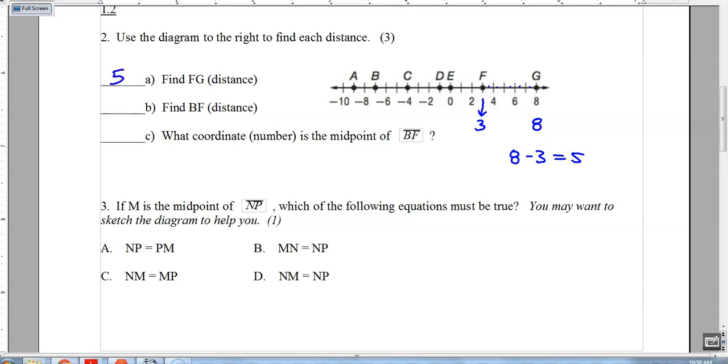So what about from B to F? Well, B is here at negative 7, F is at 3. So we've got to go all the way from negative 7 to positive 3, and if you subtract those numbers, 3 take away a negative 7, you will get 10. You also could count the spaces. So the correct answer there is 10.